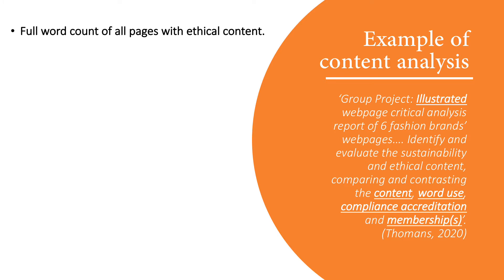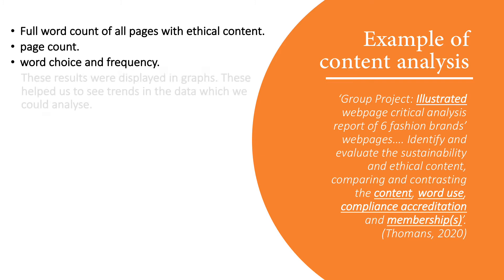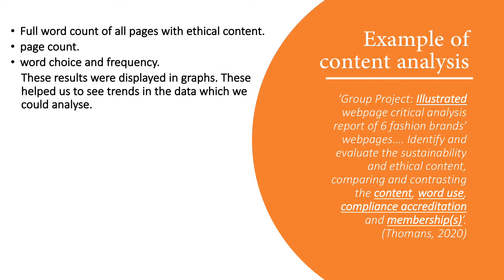We did a full word count of all the web pages that contained ethical content, and also counted the amount of pages where we found ethical content. We looked at the word choice and the frequency at which these words occurred. These results were displayed in tables and graphs, which helped us to see the trends in the data. There are search engine optimisation tools that may help you with this. If you are investigating company documents such as PDFs, there is a way to find keywords within that document which will help with this kind of task.